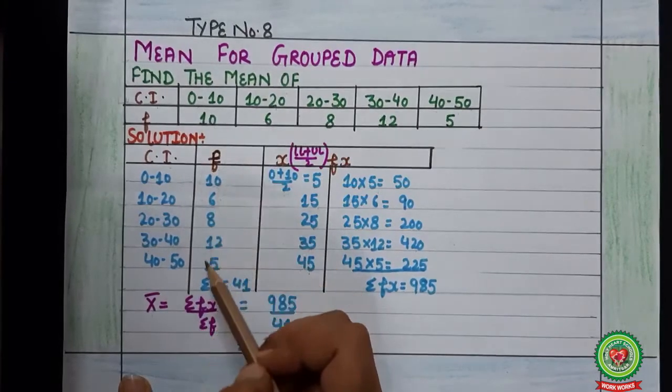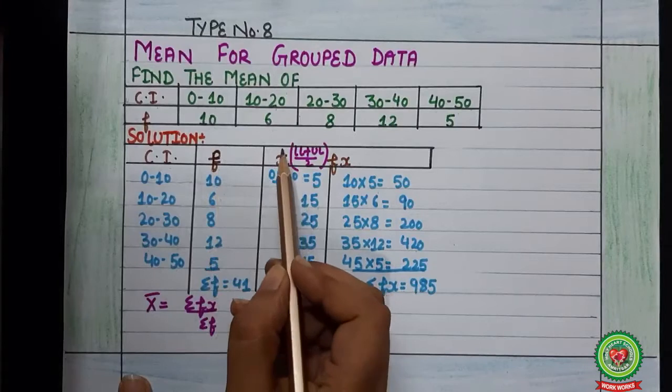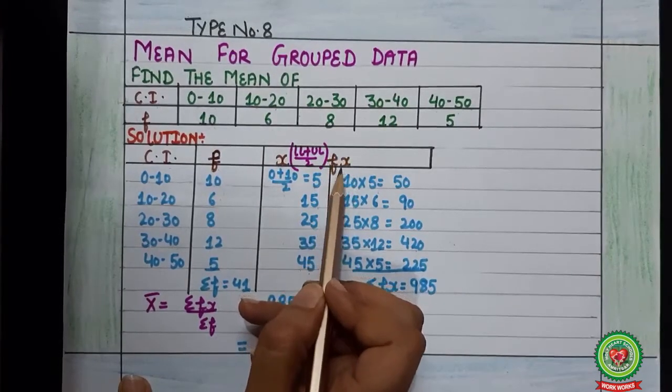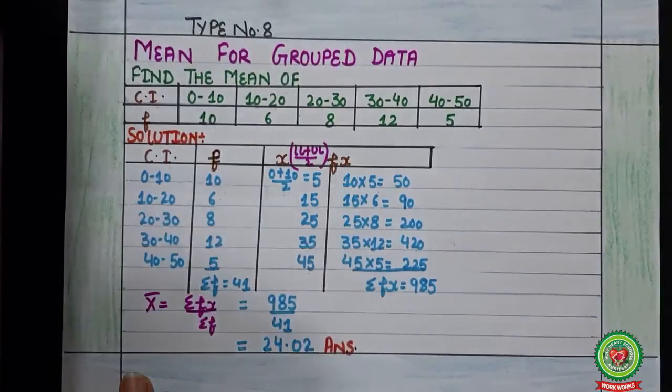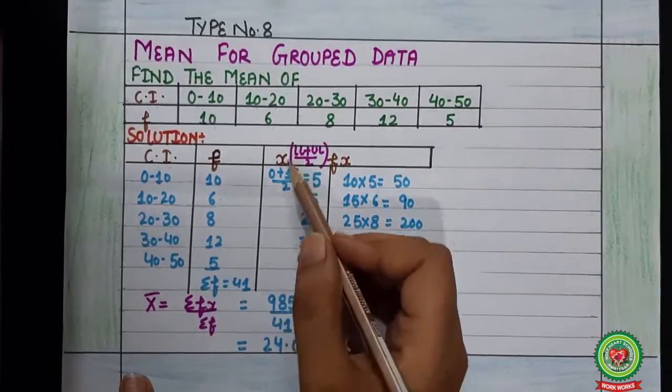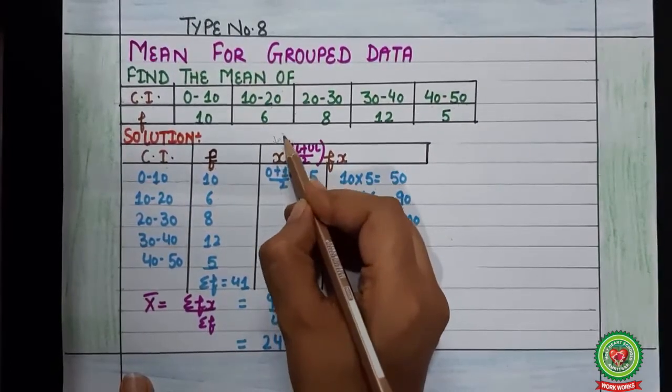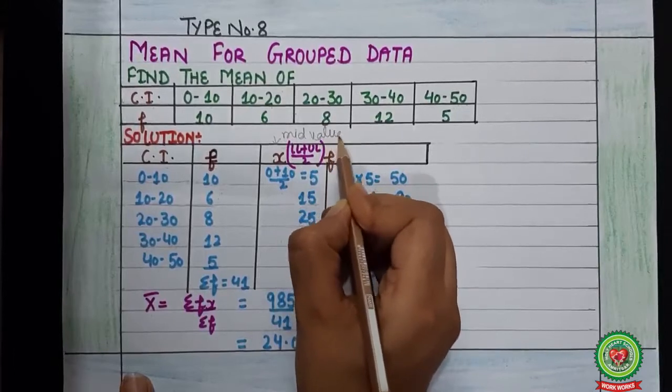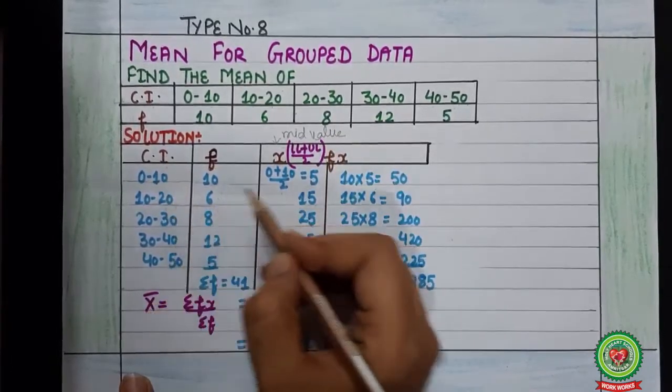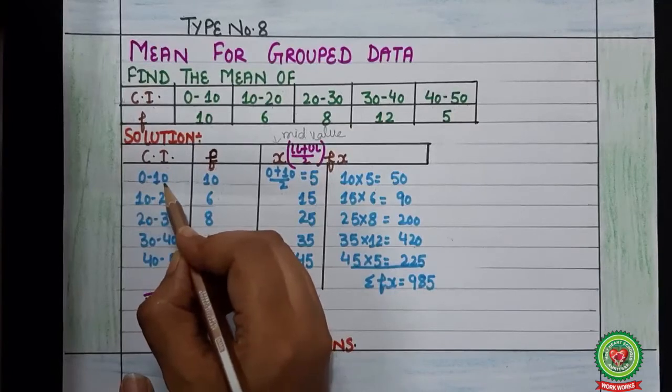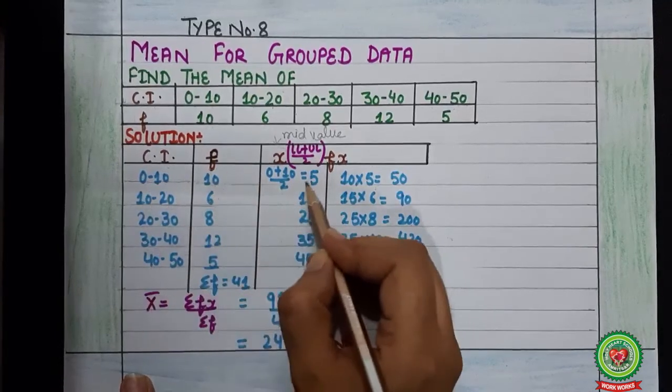And in the third column we will write x, and in the fourth column we will write fx. Children, now the question is what is x? x is the mid value. Mid value of what? Mid value of class interval.